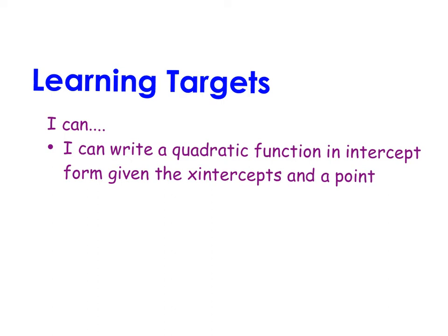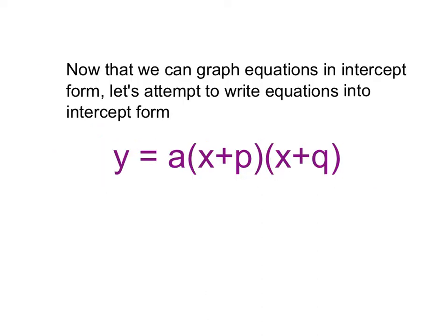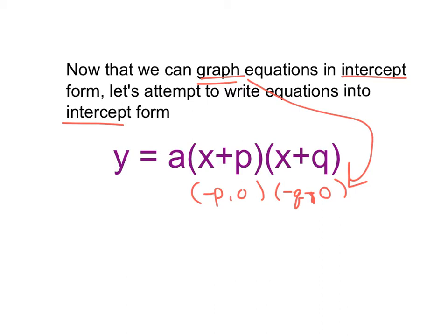In this video, we're going to write a quadratic function into intercept form when given the x-intercepts and another additional point that is not an intercept. Before we start, I want to remember how our equation relates to our graph. The opposite of p and the opposite of q represent our intercepts, so we have x-intercepts of negative p comma zero and negative q comma zero. We're going to use that information to help us find values for a, p, and q in all of these functions.